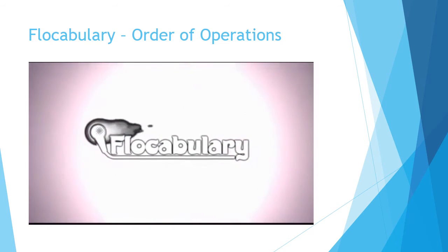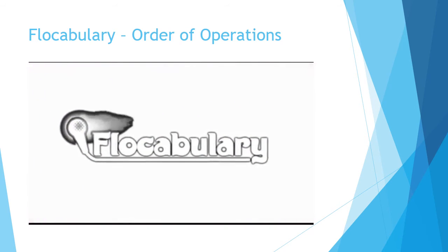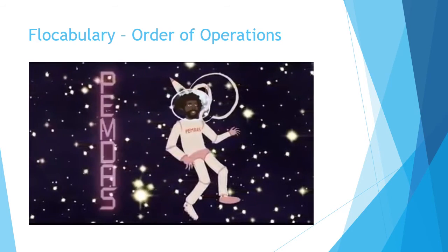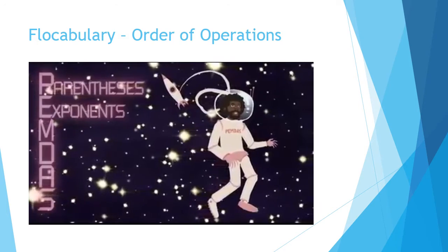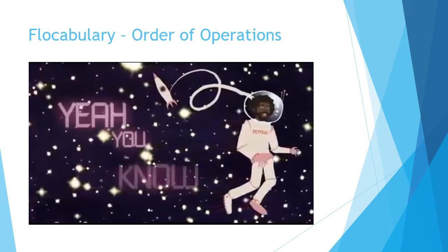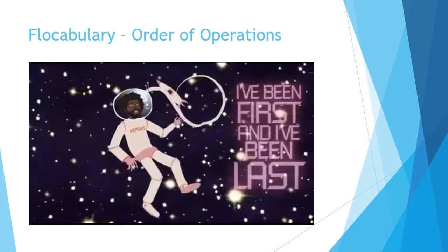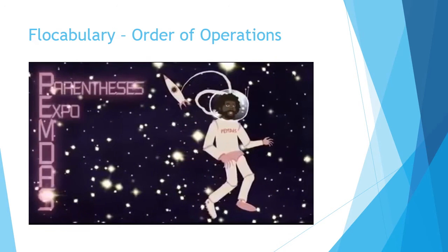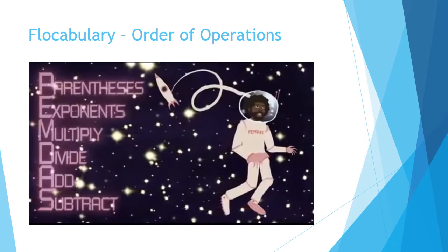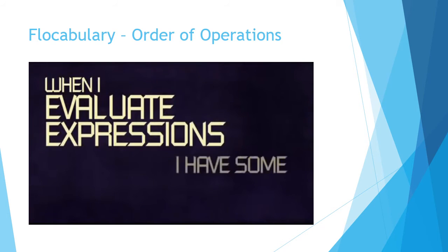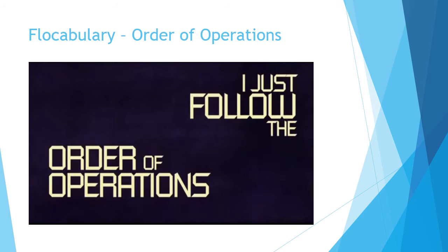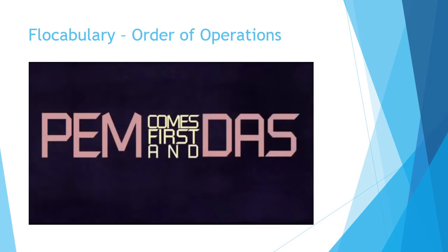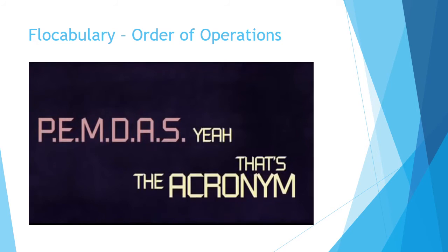Now make sure you follow step by step. I've been first and I've been last. Either way, I keep the order with PEMDAS. First is parentheses, then it's exponents. Multiply, divide, and subtract — yeah, you know this. I evaluate expressions, I have some patience. I just follow the order of operations. I simplify to see what they equal. PEMDAS comes first and the rest is the sequel. That's an acronym — we'll break it down just to see what is happening.